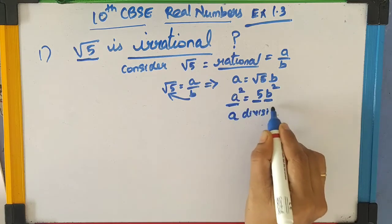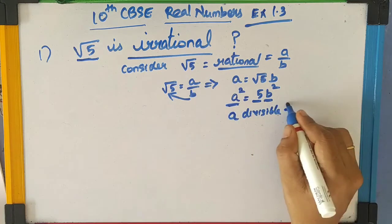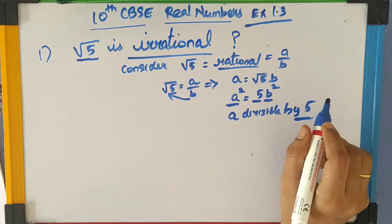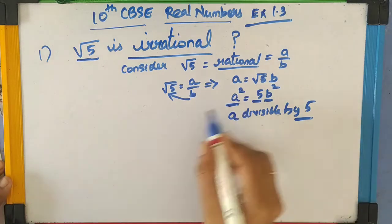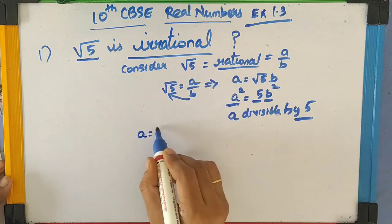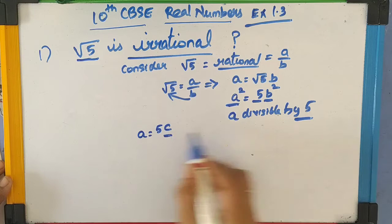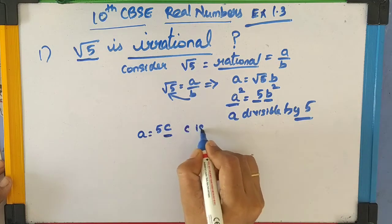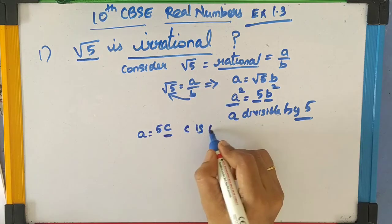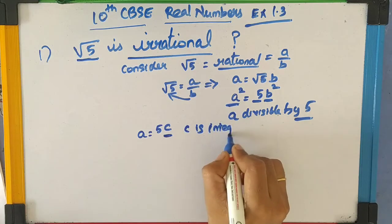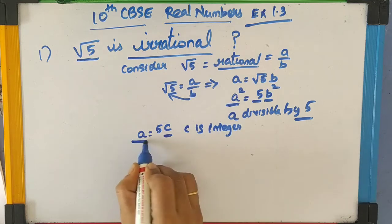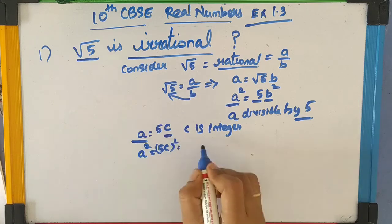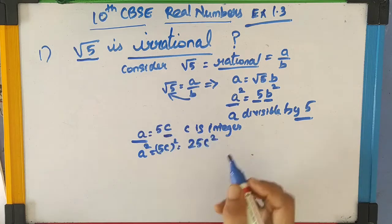Since A is divisible by 5, I can write A equals 5C. I am writing this because A is divisible by 5. Here, A and B are co-primes and C is just an integer. Now I am going to take the square of this, so A squared equals 5C whole squared, that is 25C squared.